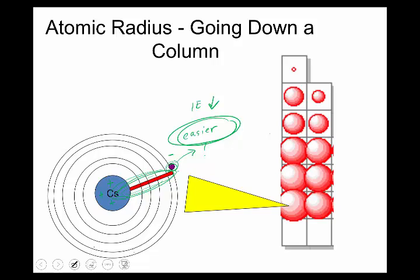So both trends, left and right, up and down, is the amount, you're looking at the amount of nuclear attraction on the furthest electron. And then you could explain any trend going in any direction if you think of that one thing.